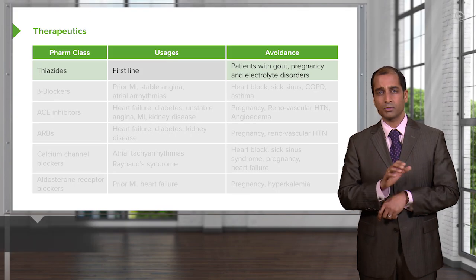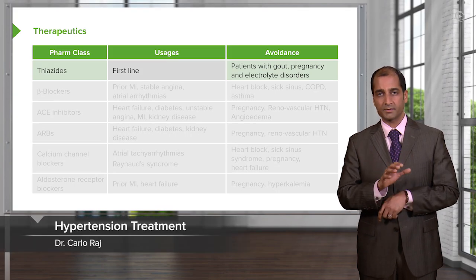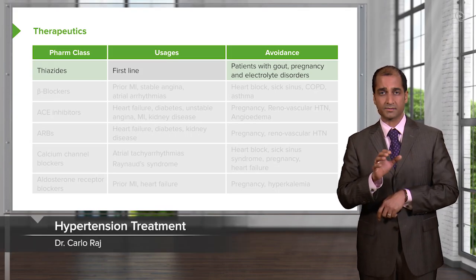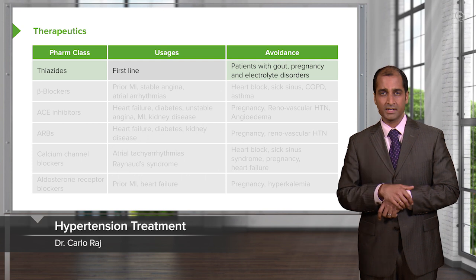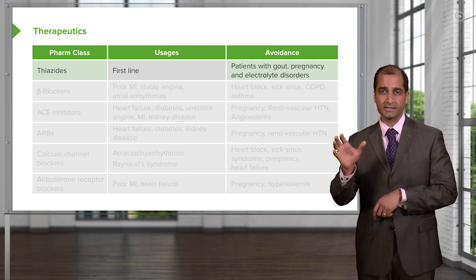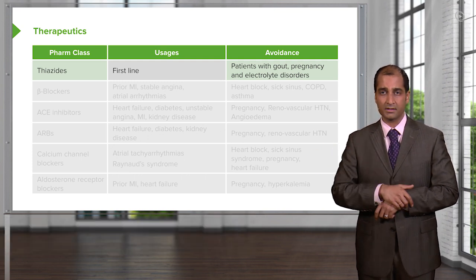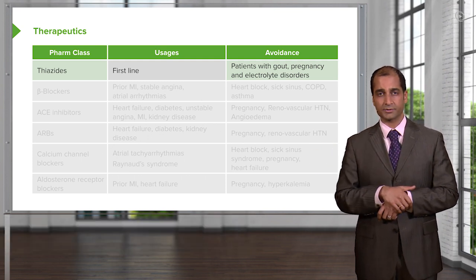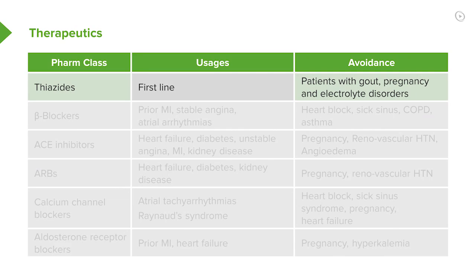With this table, we're going to quickly run through the pharmaceutical agents appropriate to treat different types of blood pressure. Thiazides — we talked about this already — are first line usage. Patients with gout, pregnancy, and electrolyte disorders should avoid them.